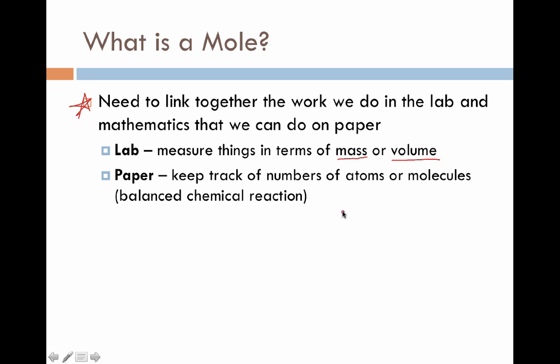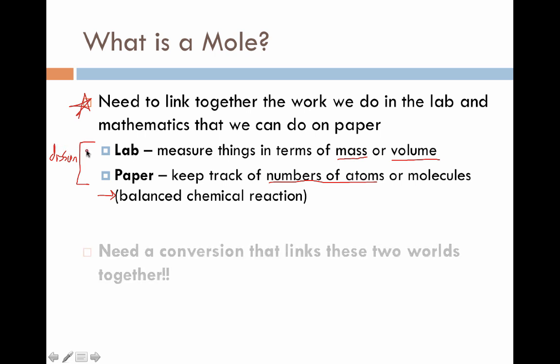However, on paper, when we're dealing with things, we're usually keeping track of numbers of actual atoms, and we do this in the form of a balanced chemical reaction. Those balanced coefficients are telling us numbers of molecules that are reacting with numbers of other molecules. As a result, there's a disconnect between the two of these things that we need to address here, and that's exactly what this mole conversion is about. It's a conversion factor that links these two worlds together, the stuff we measure in the lab and the calculations and mathematics that we do on paper.